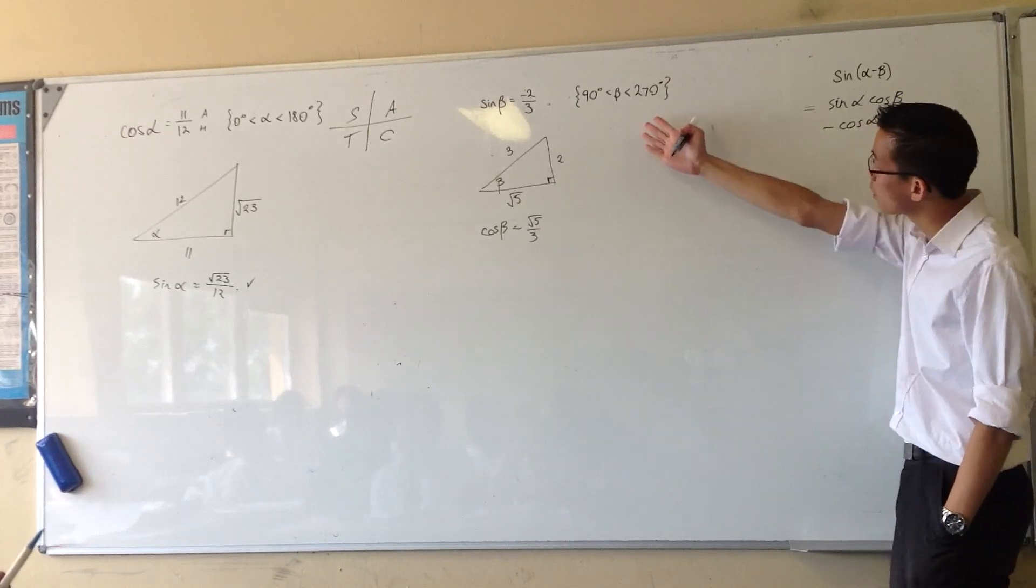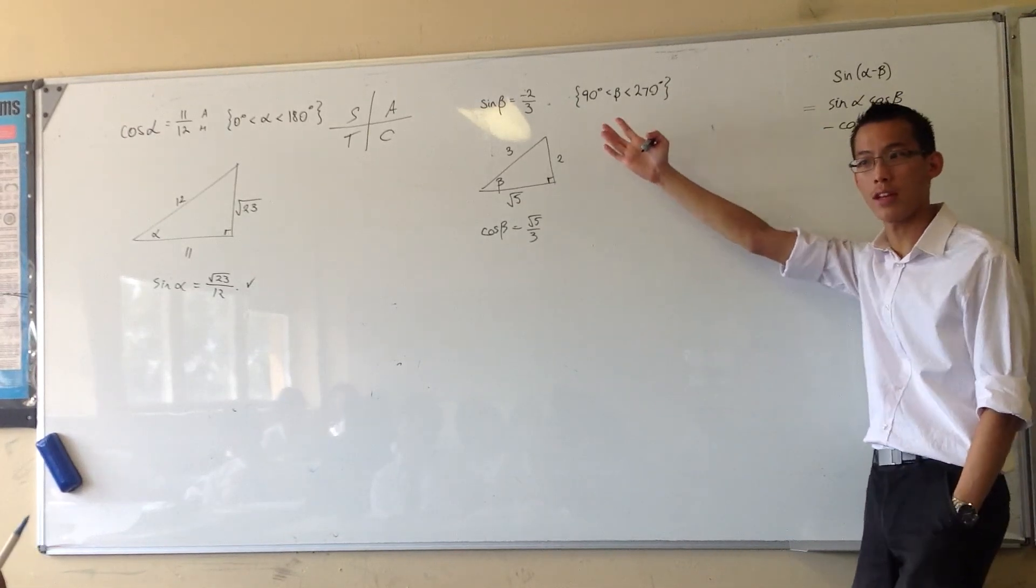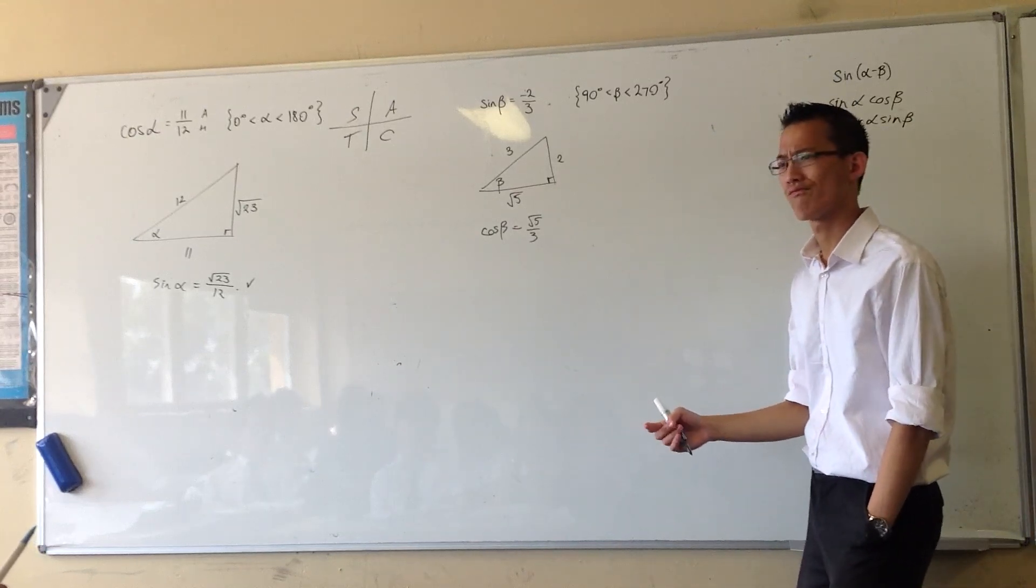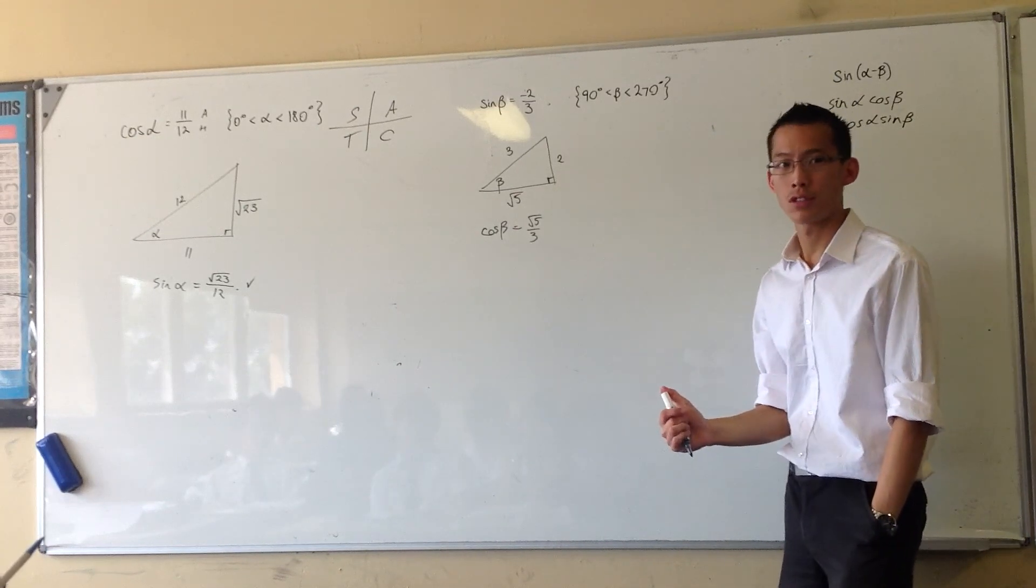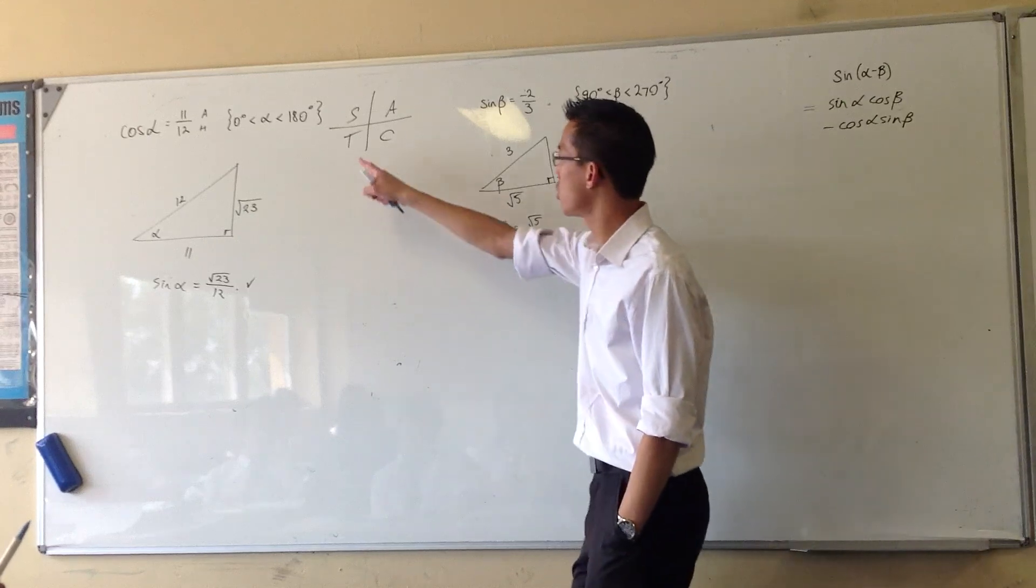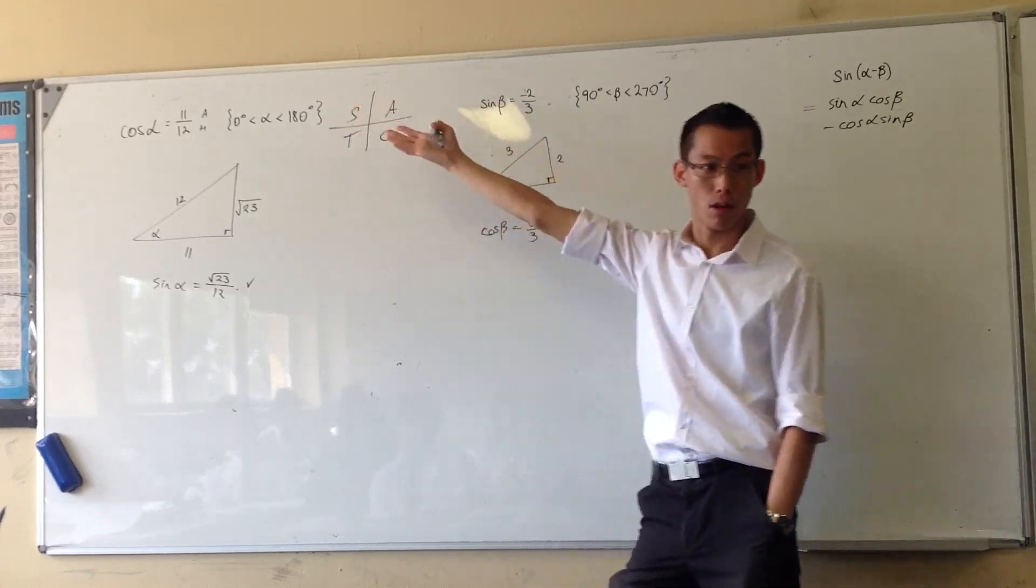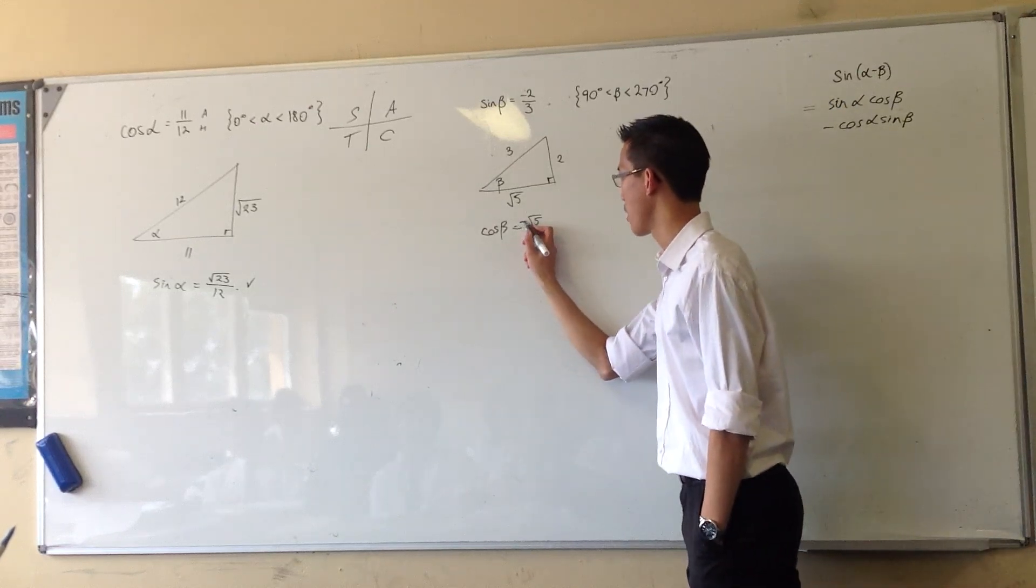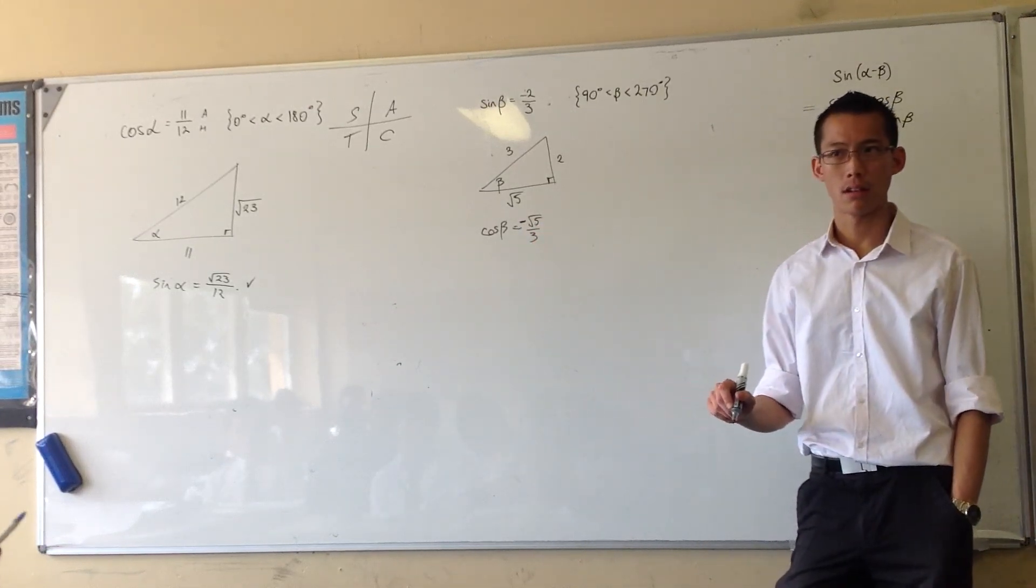Now again, you look at your domain, which is 90 to 270, which is which quadrants? 2 and 3. In quadrants 2 and 3, both of them, cosine is negative, right? So I need to slap a minus sign on the front there. So beware domain.